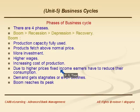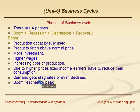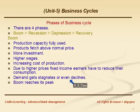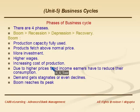Due to these high prices, fixed income groups have to reduce their consumption. Due to the increasing cost of production, goods are available at a higher cost. Hence, those who are earning fixed income have to reduce their consumption, and demand gets stagnated or even declines. This means the boom has reached its peak — it is the peak period for boom. From here onward, recession would start.